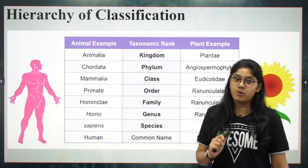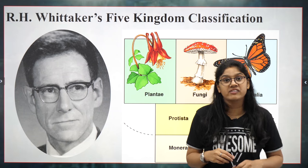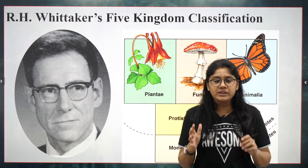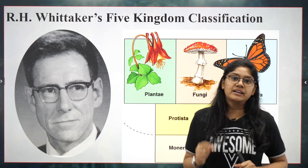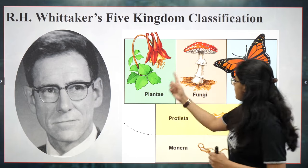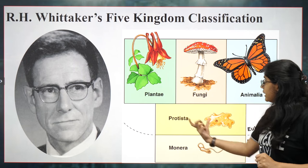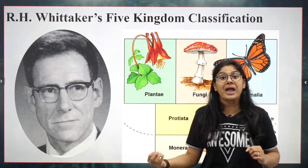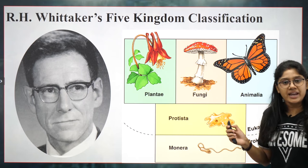Now let's talk about the very famous scientist who gave us the classification — R.H. Whittaker. He was working on the classification process and thought it was really very important to give an exact classification. He divided all kingdoms into five different categories based on different types of animals. He gave us: Monera — in which microorganisms like bacteria are present — then Protista, then Fungi, then Plantae, and finally Animalia. These are the five kingdom classification given by R.H. Whittaker.